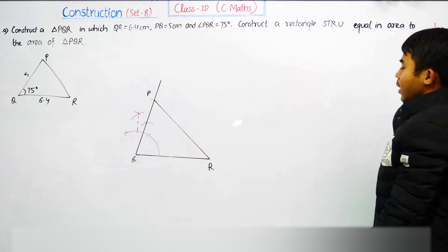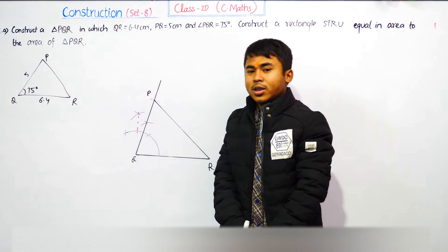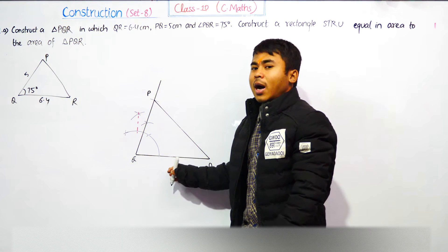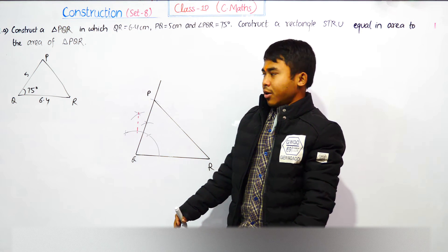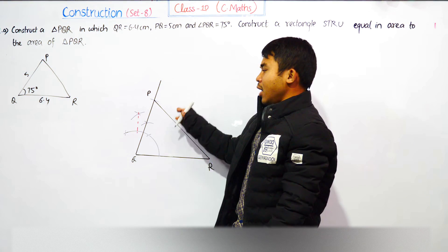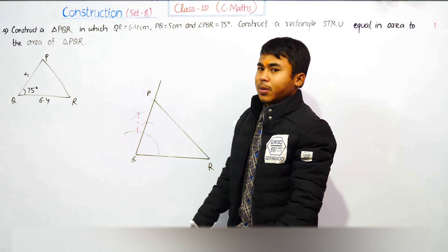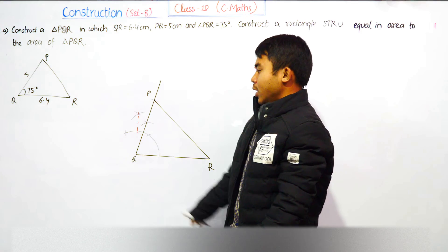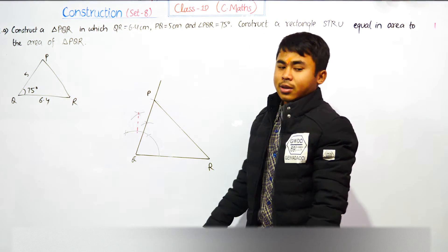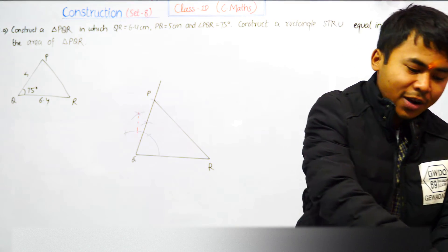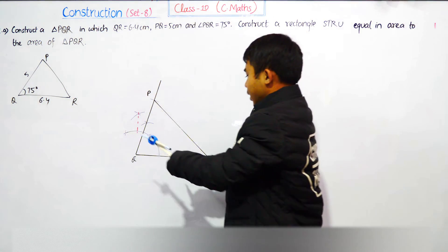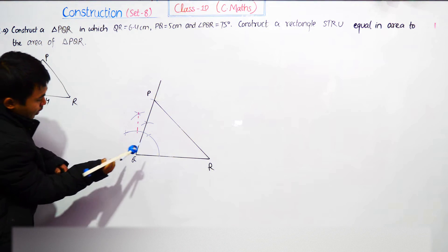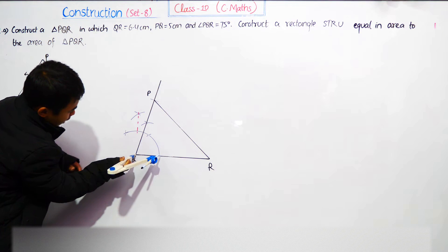The area of the triangle is set. Now we construct a rectangle whose area equals the triangle area. The rectangle and triangle are equal in area because they share the same base and lie between the same parallel lines. A rectangle is a special parallelogram with all right angles.